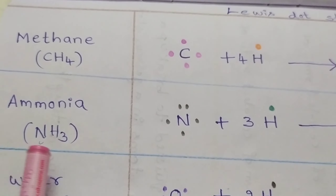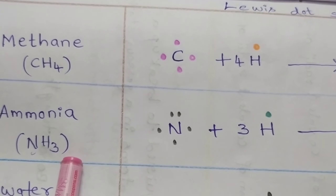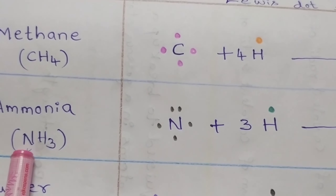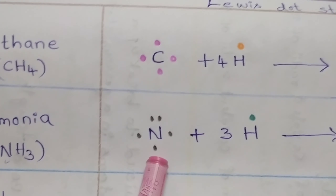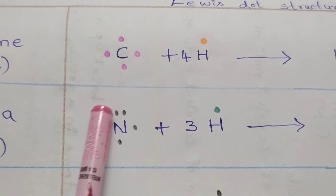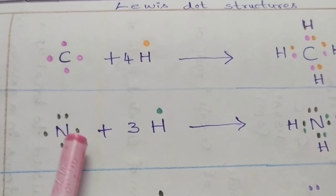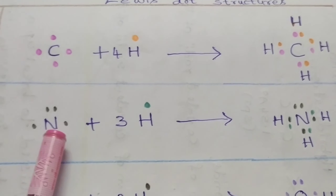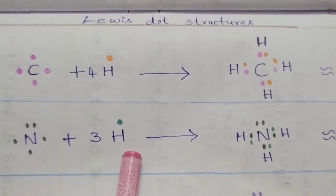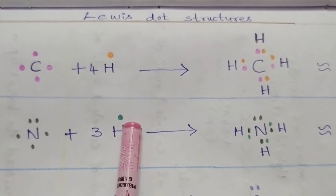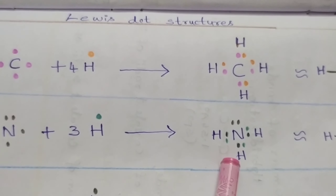Now we discuss the Lewis structure of an ammonia molecule. In the ammonia molecule, nitrogen is the central atom. This nitrogen contains five valence electrons. In order to get an octet configuration, this nitrogen atom reacts with three hydrogen atoms, which each contain one valence electron, and forms an ammonia molecule.